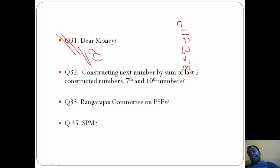Next will be 3 plus 2 equals 5, again 5 plus 3 equals 8, and so on. The 7th and 10th numbers: the 7th number is 8. So in the options there is only one 8, so the answer here will be C, that is 8 and 34.